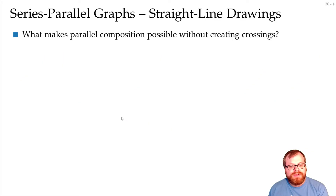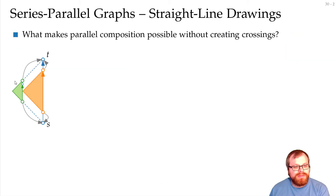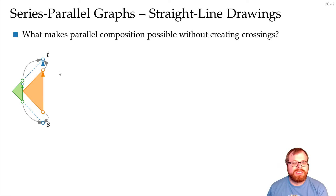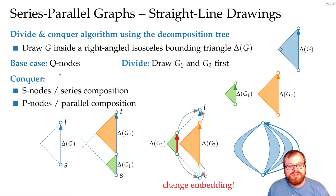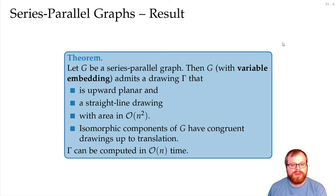What about the area? I only want to see how large the height is. Here in the series composition, we just add up the height of both triangles. In the parallel composition, if we really make sure that the green and the orange triangle touch, then what we add here and here is exactly the same as what we have here. So in every composition, we only add up the heights of the two different subgraphs. The whole height of the drawing is just the sum of the heights of all the base edges of the Q nodes, which we can draw with a length of 1. So the height of the whole drawing is n, and the width, since this is a triangle, is at most n over 2. So the resulting drawing area is quadratic.